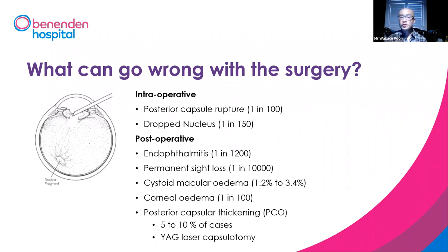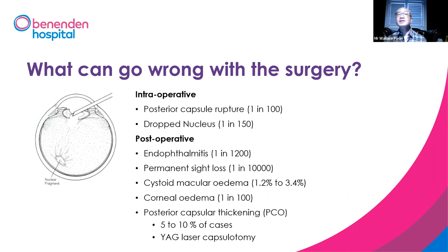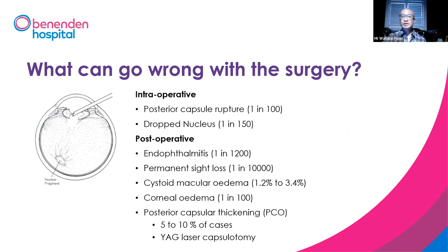When we perform the surgery there's also a chance you can have swelling in the eye. Cystoid macular oedema is a specific term describing swelling at the back of the retina — it happens around one to three percent and eye drops will normally settle it. The cornea can also be swollen in around one in 100 cases, and it will settle with time in most cases. After the cataract operation, five to ten percent of patients can have the capsule become opacified. This will cause blurriness again — a bit like the cataract coming back — but it's actually not the cataract coming back; the capsule has just thickened. That can be easily dealt with using YAG capsulotomy. You sit there five minutes, walk out, and see better straightaway.